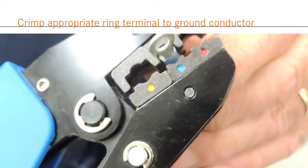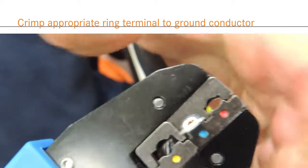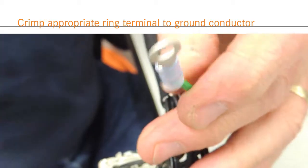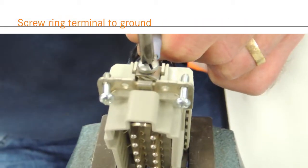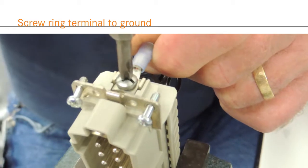Terminate the ground contact by crimping the appropriately sized ring terminal to the contact. Remove the grounding screw and plate and affix the ground.